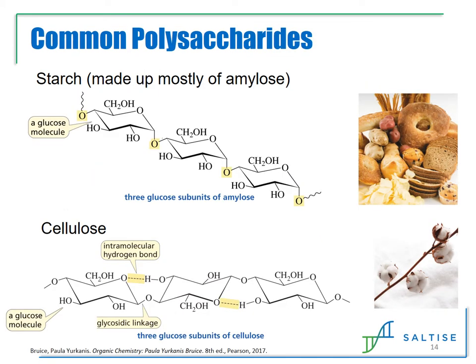Starch and cellulose are both common polysaccharides made up of glucose sugars linked together, yet the three-dimensional shape results in only starch being water-soluble. Starch is found in many foods such as potatoes, rice, flour, and beans. It's water-soluble because it's in a helix form, which allows the hydroxyl groups to be exposed to water for hydrogen bonding. Cellulose, on the other hand, is insoluble in water and is the major component of plants — for example, it makes up 90% of cotton. Cellulose are straight chains because of the three-dimensional shape around the glycosidic linkages. The difference between starch and cellulose is that the middle glucose molecule is flipped, so the hydroxyl group points upward in cellulose and downward in starch.